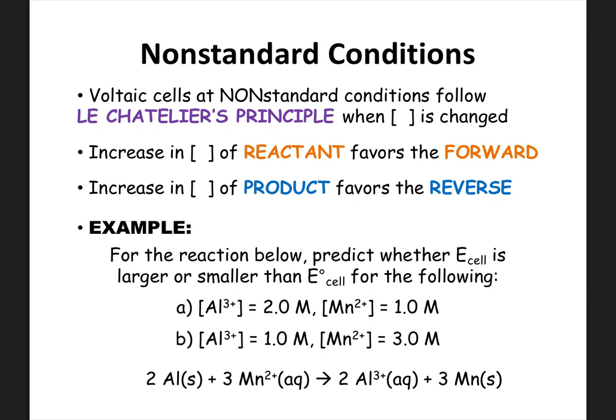If you were to increase the concentration of a reactant, the forward reaction would need to take place to use up that extra concentration. And if you had an increase in concentration of your product, the reverse reaction is going to be favored to use up that extra product concentration. So if you were going greater than one molar for your product, the reverse reaction is going to be favored.